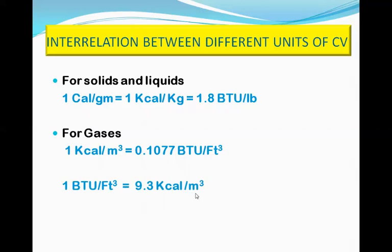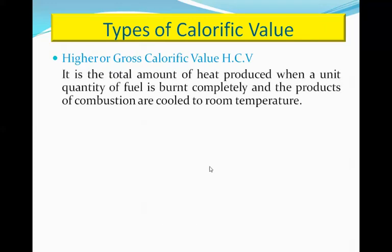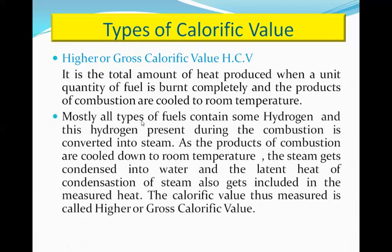The calorific value itself is of two types: higher calorific value (HCV) and lower calorific value (LCV). Higher calorific value is the amount of heat produced when a unit quantity of fuel is burnt completely and the products of combustion are cooled to room temperature. Most fuels which contain hydrogen result in the hydrogen being converted into steam during combustion. As the products are cooled to room temperature, the steam condenses into water and the latent heat of condensation of steam is also included in the measured heat. The calorific value thus measured includes the latent heat of condensation and is therefore called the higher or gross calorific value.